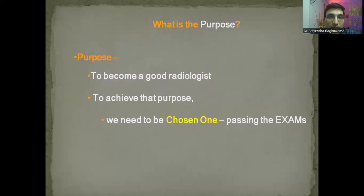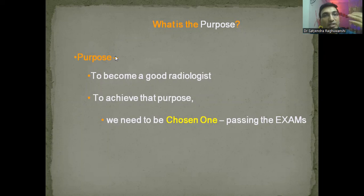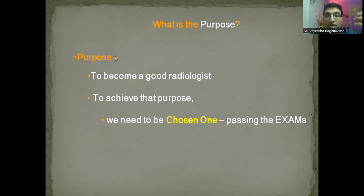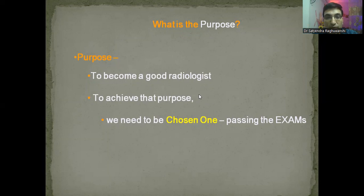By these case scenarios, the purpose of table viva becomes clear. The purpose of our PG is to first become a good radiologist, and to achieve that we need to pass the examinations. In MD, passing may not be very difficult, but DNB practicals are very difficult because it is an alien center and they are ready to fail you. You need to know exactly what you're supposed to speak. To become a good radiologist, firstly we need to become a radiologist, and for that we need to pass the practical examinations.